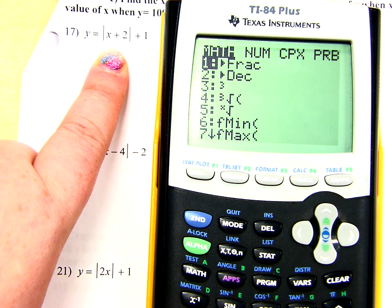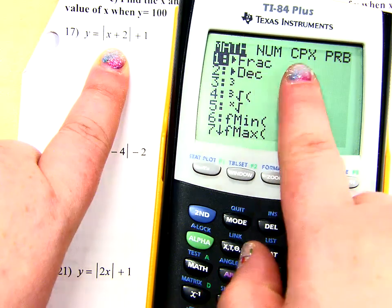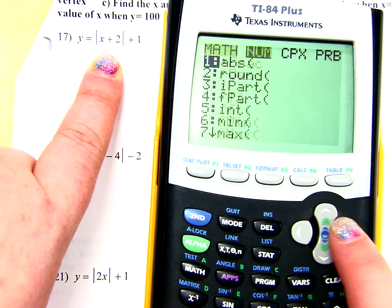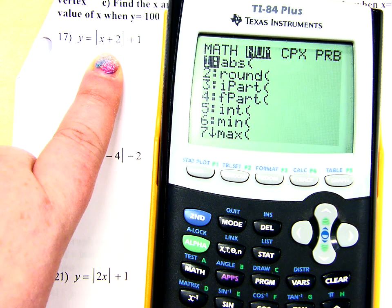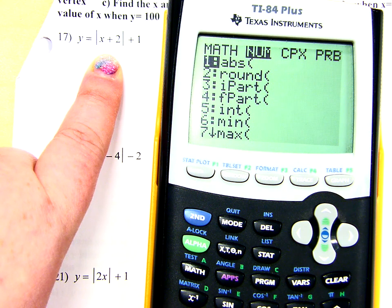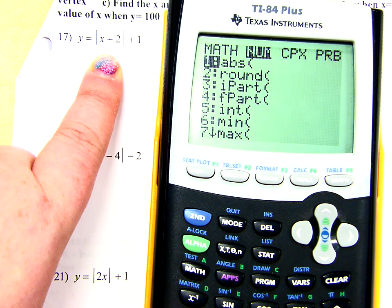And then once you hit math, across the top there's these tabs: math, num, cpx, prb. You want to tab over just one time to number. The very first option says ABS. That stands for absolute value. So we're going to go ahead and choose number 1.